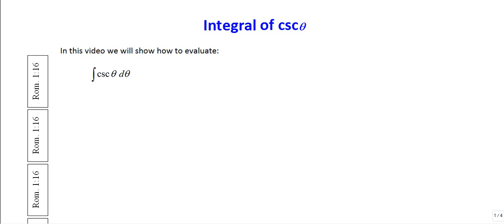As we explained in trying to find the integral of secant, we want to look at this in a backwards approach — meaning we want to look at the derivatives of, in this particular case, cosecant and also cotangent. We will begin by doing that first before anything, as an aside.